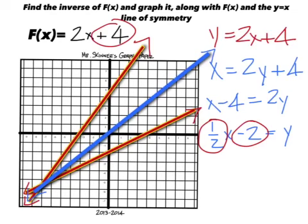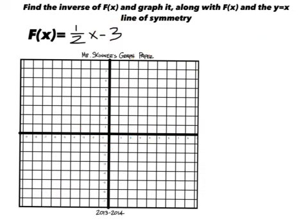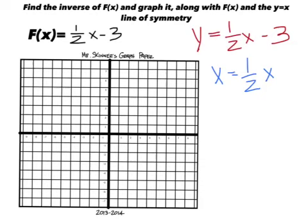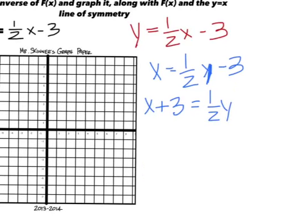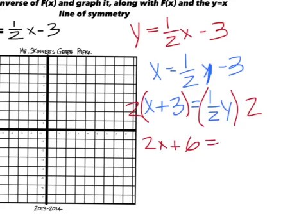For the next one, we need the inverse of y equals one-half x minus three. Swap x and y, then get y by itself: x plus three equals one-half y. Multiply both sides by two to get rid of the denominator, giving us two x plus six equals y.